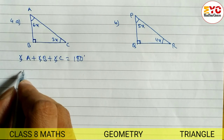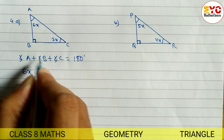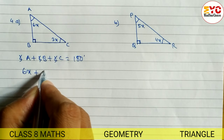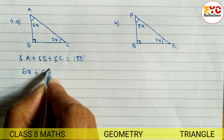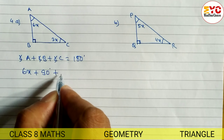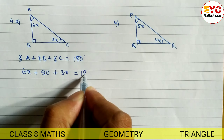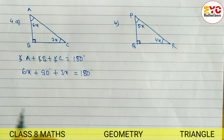Angle A is equal to 6x, so we write 6x. Angle B is equal to 90 degrees, so we write 90 degrees. Plus angle C is equal to 3x, so 3x is equal to 180 degrees.